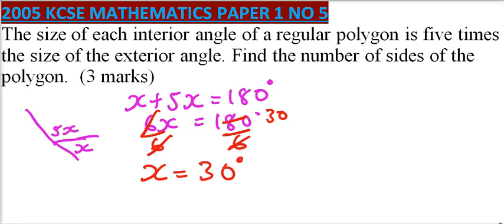If x is equal to 30, it means 5x is equal to 30 times 5. That is 150 degrees.